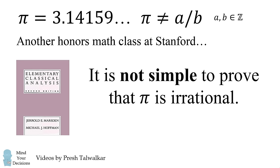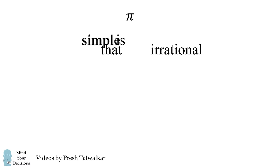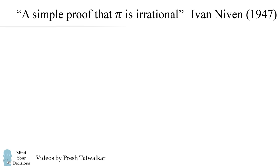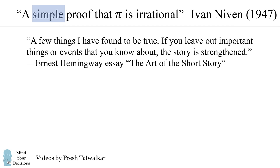So in this video, we're going to attempt this very task. We're going to rely on a 1947 paper by the number theorist Ivan Niven, a simple proof that pi is irrational. But how can it be simple? We're going to take a little detour to Hemingway. Here's a quote. A few things I have found to be true. If you leave out important things or events that you know about, the story is strengthened.